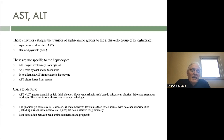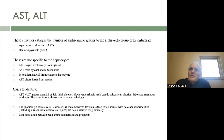If your AST is greater than the ALT by 2-to-1 or 3-to-1, of course you're going to think alcohol. However, cirrhosis itself from any cause can do this, as can physical labor and strenuous workouts. The elevations with workouts are not pathologic.